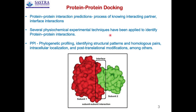Several physicochemical experimental techniques have been applied to identify protein-protein interactions. Various methods have been developed so far, including phylogenetic profiling, identifying structural partners and homologous pairs, extracellular localization, post-translational modification, and combinations of these procedures. Over the past three decades, many interaction prediction methods have been identified, and as a result, a large number of databases have been created to catalogue and annotate these interactions.